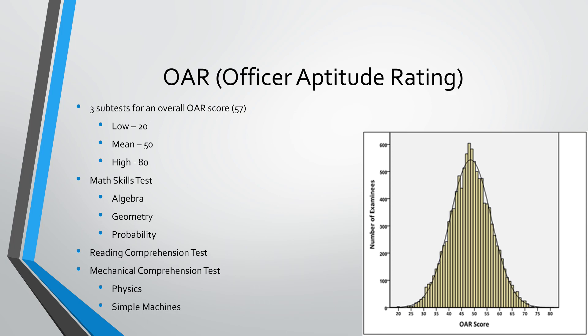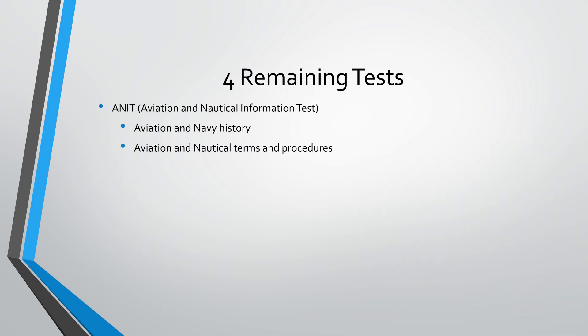The four remaining tests is the ANIT, which is your aviation and Navy history and your aviation nautical terms and procedures. The good thing about this one is it's the easiest to study for mainly because it doesn't change. If you have had any flight training at all as well, this section will be pretty easy for you because a lot of the information from the Navy side of things translates over into the aviation side of things.